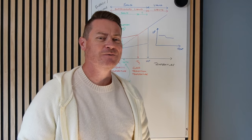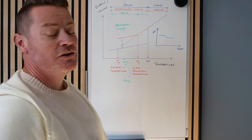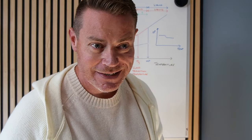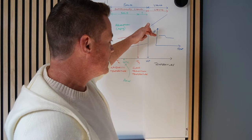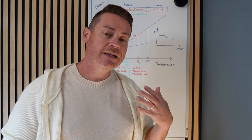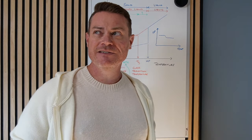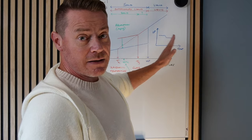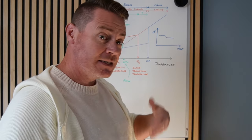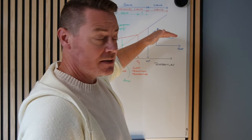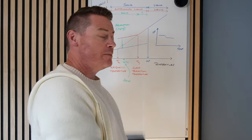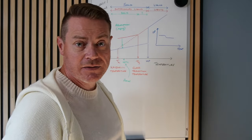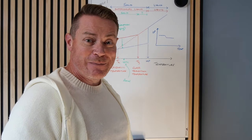You might ask how this diagram explains the step change in the DSC. The answer is that the position of the baseline in the DSC is dependent upon the heat capacity of your sample — specifically the difference in heat capacity between sample and reference. The slopes of the lines on the thermodynamics diagram, before and after the glass transition temperature, are actually proportional to the heat capacity of the material — meaning how much energy we need to supply to get it to go up in temperature.